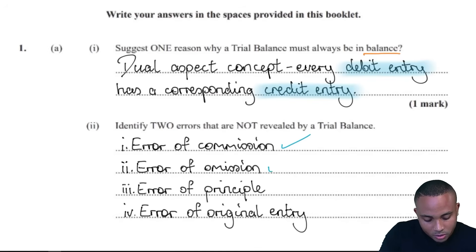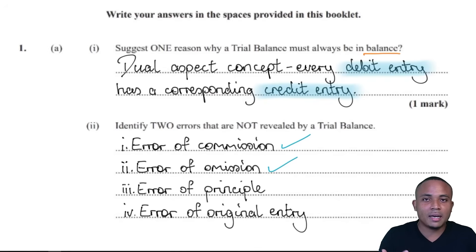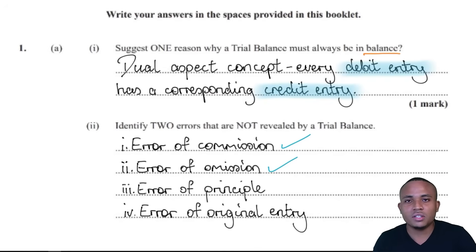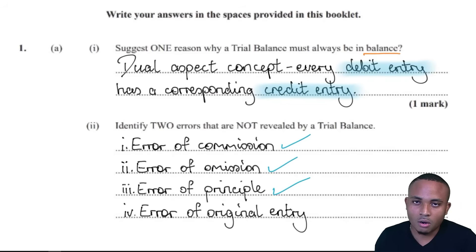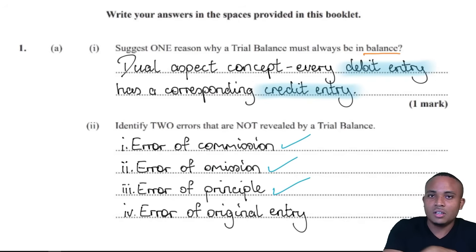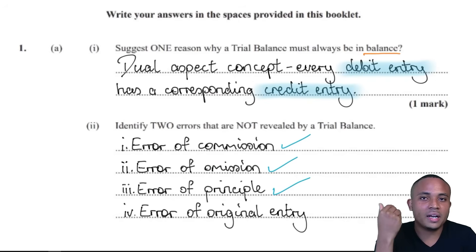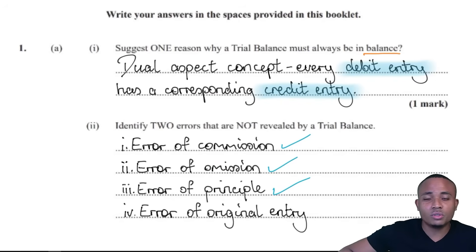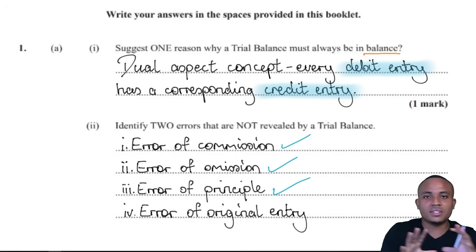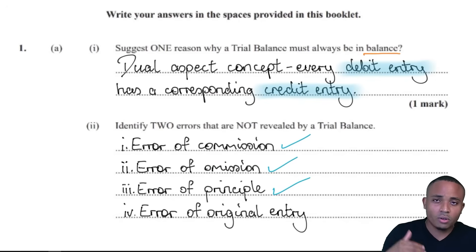Error of omission: this is where you totally do not enter the information. If the information is not entered, the trial balance will still balance, but the information within it will not be accurate because it will have insufficient data. Then we have the error of principle — another form of entering information into the wrong account, but this time into a different type of ledger. For example, gas for a motor vehicle expense of 300 entered into the motor vehicle asset account instead of the motor vehicle expense account. Those are two different ledger types — one is an expense account and the other is an asset account — hence it is called an error of principle.